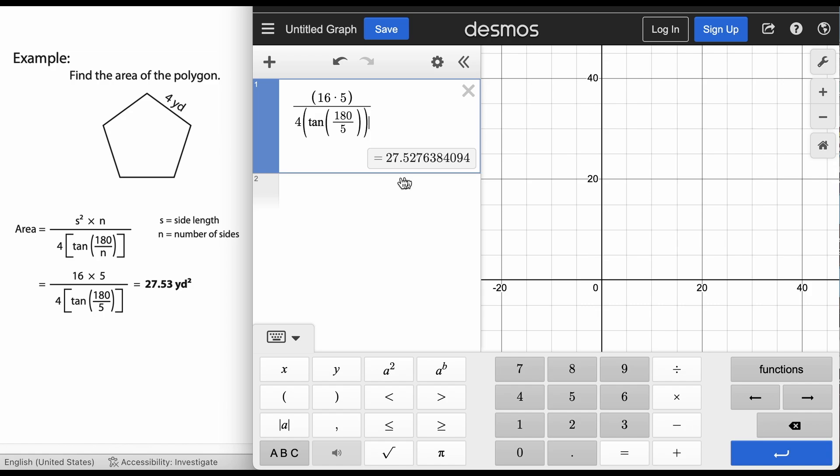But the simplest way to find the area of a regular polygon when the only thing you know is a side is just to use this formula and then plugging it in any type of calculator or Desmos being the easiest one to use.